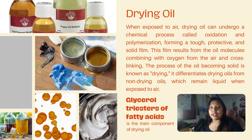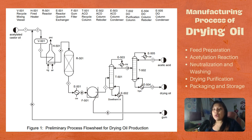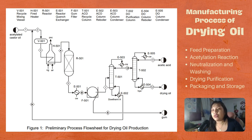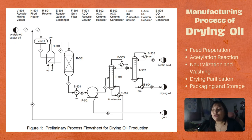The manufacturing process of drying oil specifically uses acetylated castor oil (ACO) as the feedstock, involving a chemical modification called acetylation. This process enhances the drying properties of the oil, making it suitable for various applications such as paints, varnishes, and coatings. Production starts with feed preparation, where the oil obtained from castor beans through pressing or extraction is conditioned and prepared. The ACO feed is mixed with recycled ACO and passed through a vessel that helps maintain constant flow downstream of the mixing point, followed by fired heating at a temperature that allows the reaction to proceed.